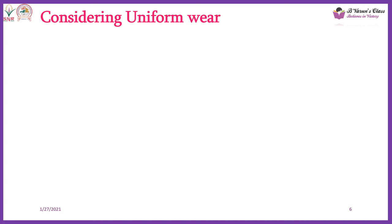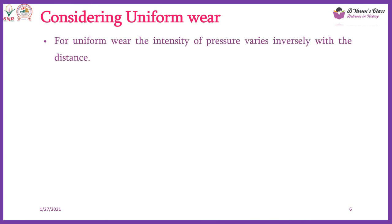The design of a single plate clutch is calculated based on two assumptions: one is when there is uniform pressure, and another when there is uniform wear. When we are using a new clutch, we consider uniform pressure. When we are using an old clutch, we consider uniform wear. For today's class, we are going to consider uniform wear. For uniform wear, the intensity of pressure varies inversely with the distance — the pressure is not the same throughout the surface. Therefore, pressure into radius equals a constant: P1×R1 equals P2×R2 equals C (constant).